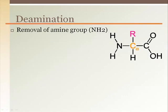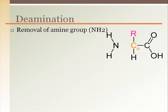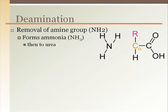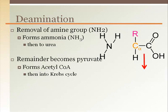When amino acids are used for energy, such as in starvation, or when too much protein has been consumed, amino acids are deaminated. This process forms ammonia, which is converted to urea by the liver, then removed via the bile from the liver or urine from the kidneys. The bulk of the amino acid becomes pyruvate, which can be converted to acetyl-CoA for use in the Krebs cycle for ATP production.